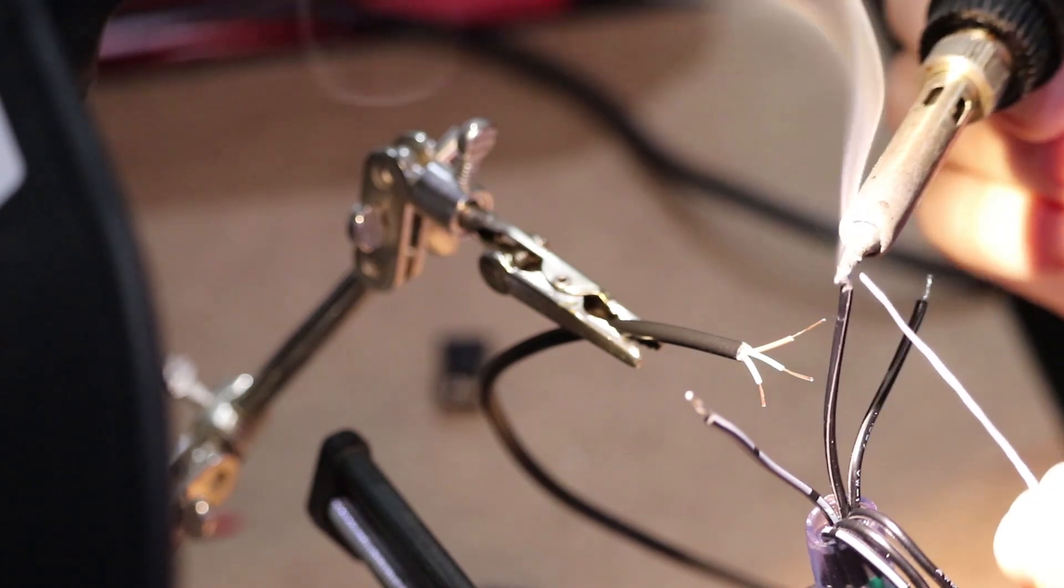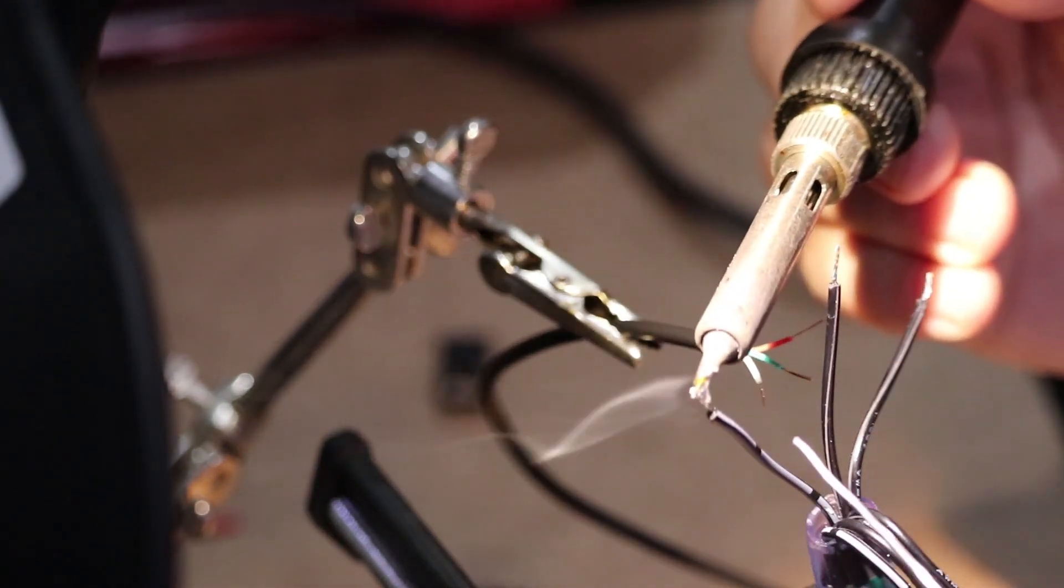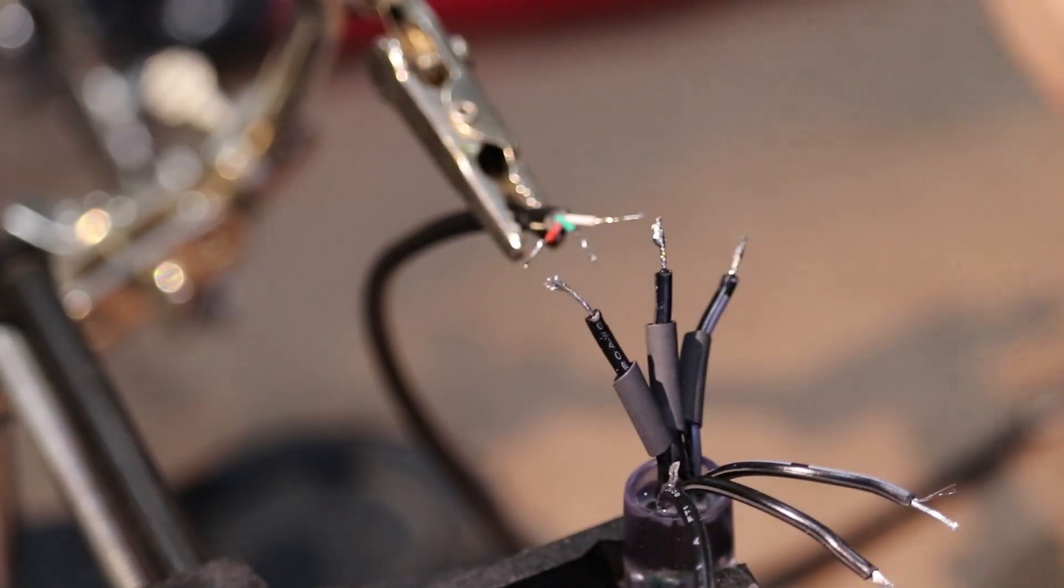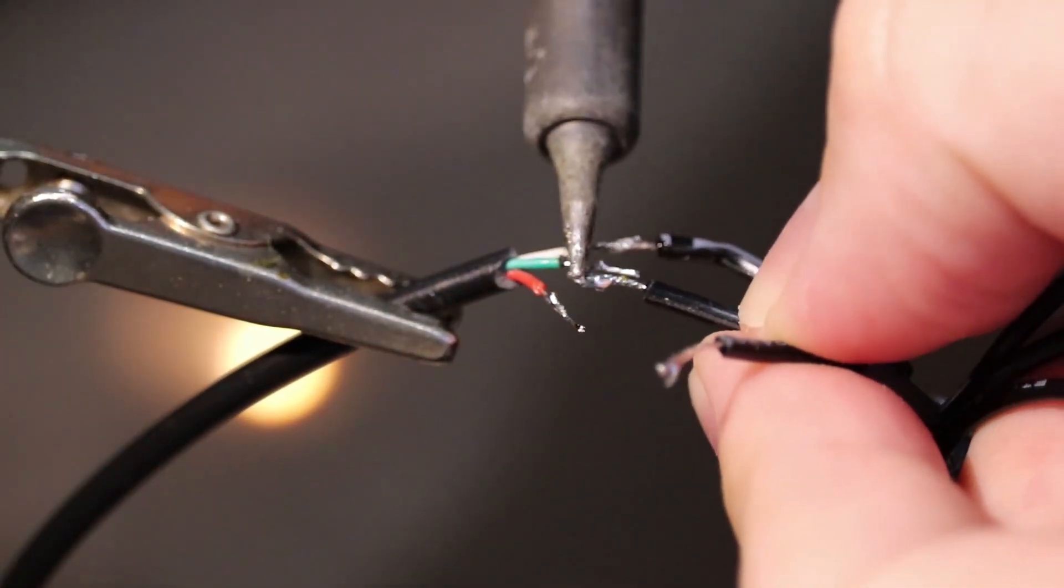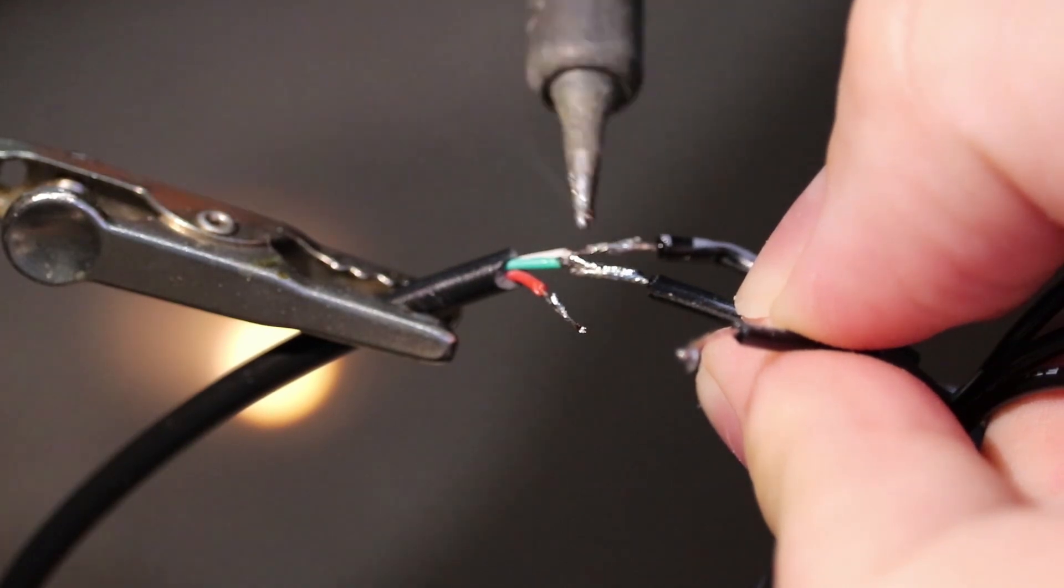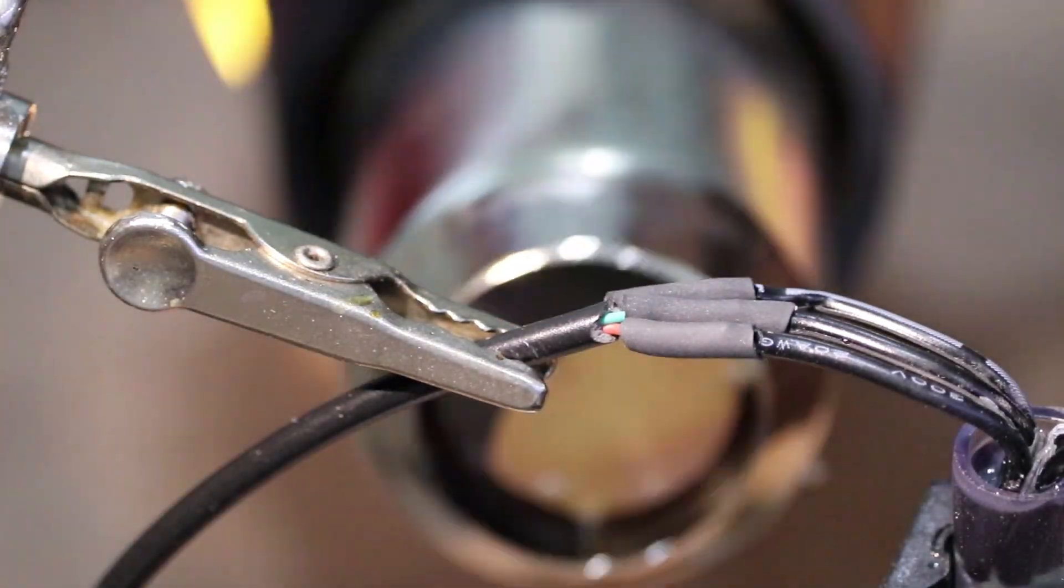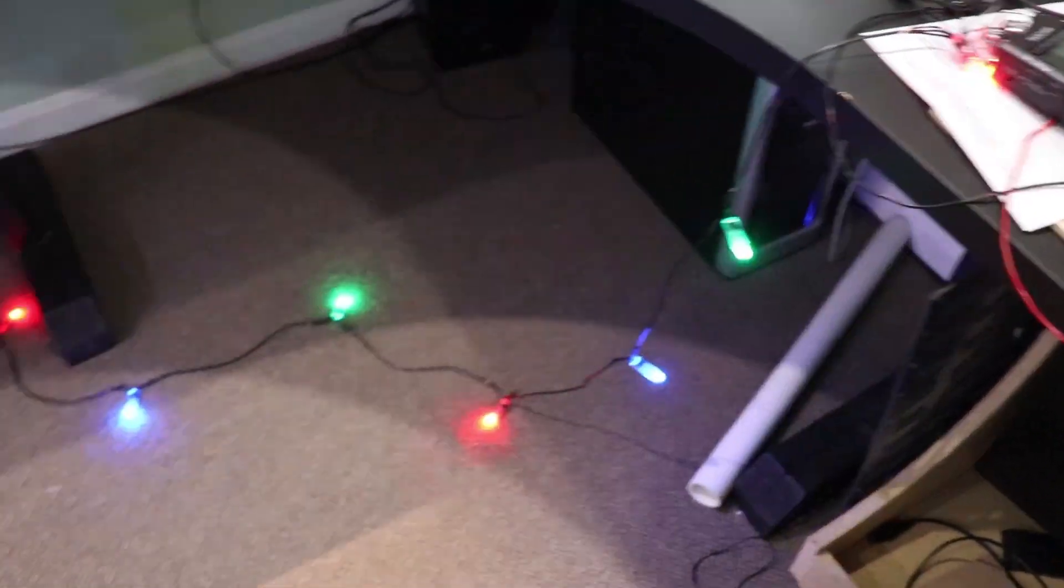I started out by tinning each of the wires with a little bit of solder. Then I slipped on a piece of heat shrink tubing which would provide some electrical isolation for the signals. Then I soldered each of the 3 wires and applied some heat with my heat gun. I repeated this step for all 26 LEDs. This took several hours.